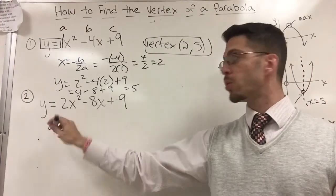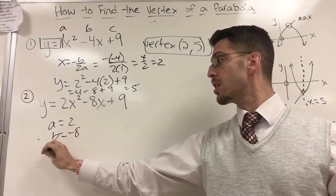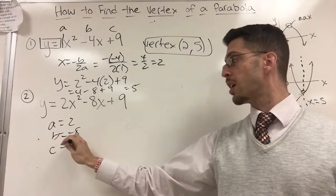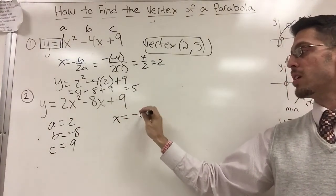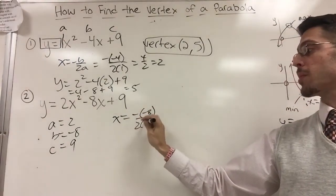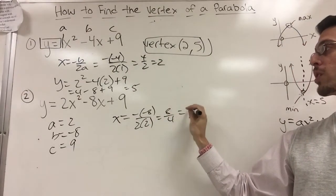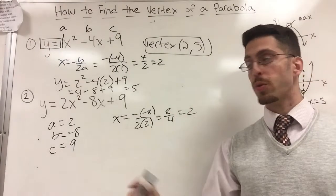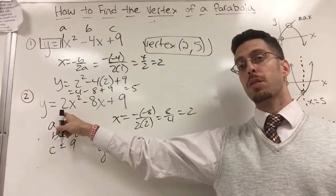So here A is 2, B is negative 8, and C is positive 9. Now again, I want to find the vertex. So x equals negative B, which is negative negative 8, over 2 times A is 2 this time. So that's positive 8 over 4, which coincidentally happens to be 2 again, not always. But I still need the y. So I'm going to go back to the beginning and plug in my answer.